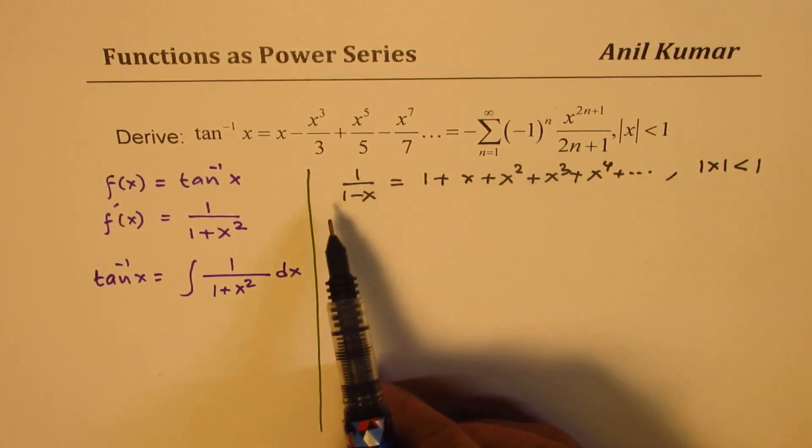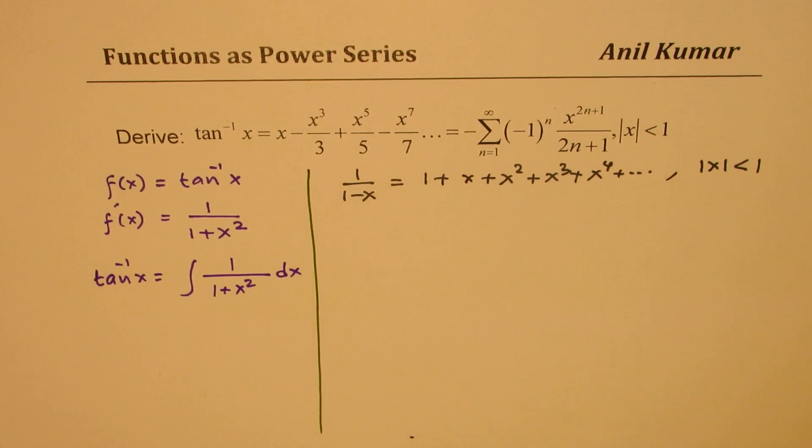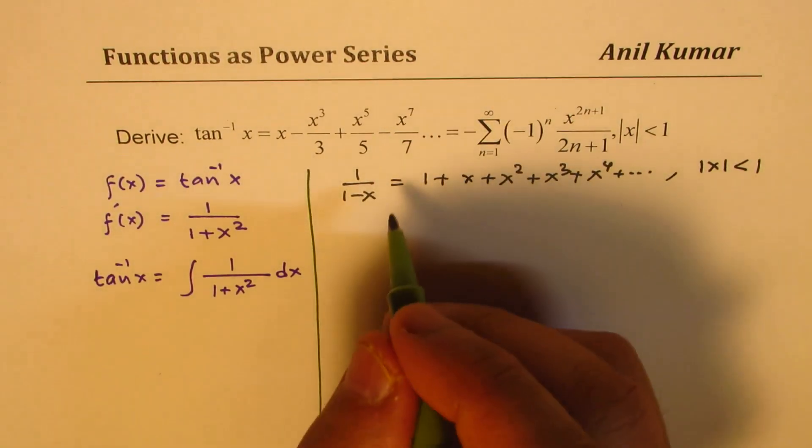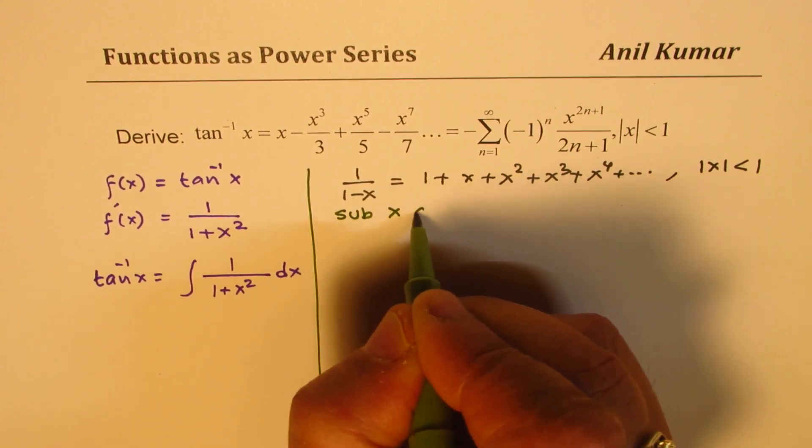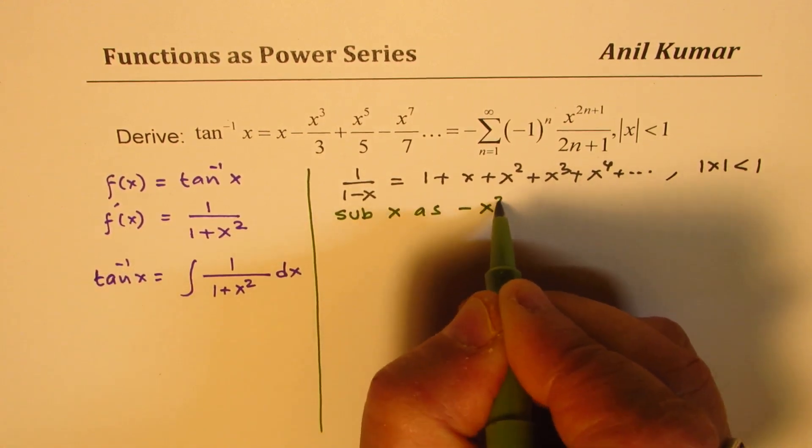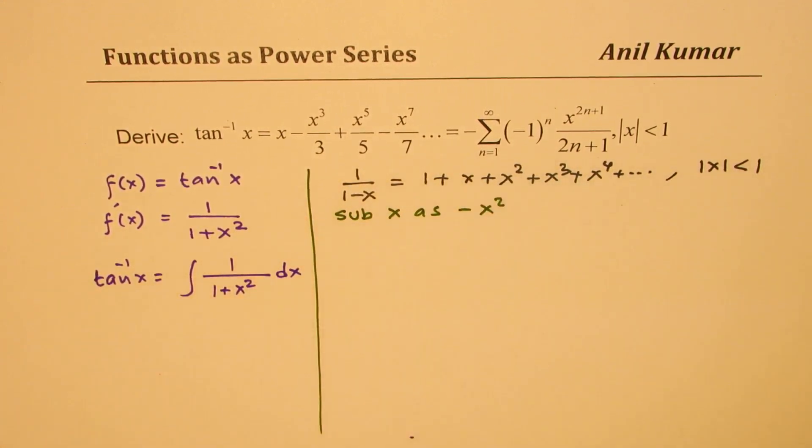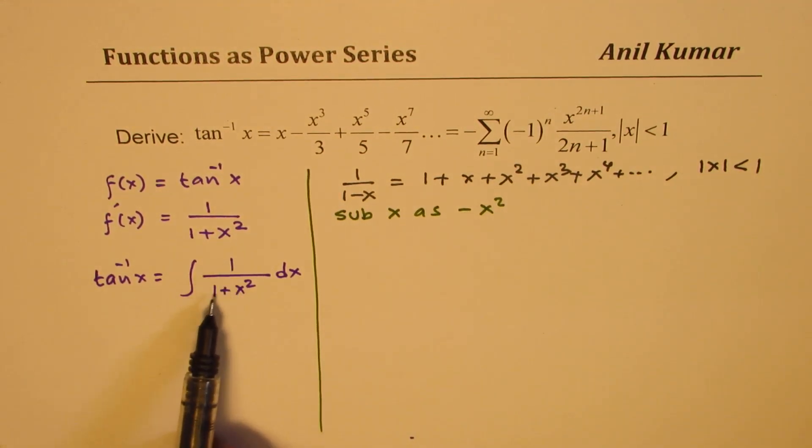Now in this, if I substitute x as minus x squared, then what happens? In that case you get a series which you are looking for: one over one plus x squared.